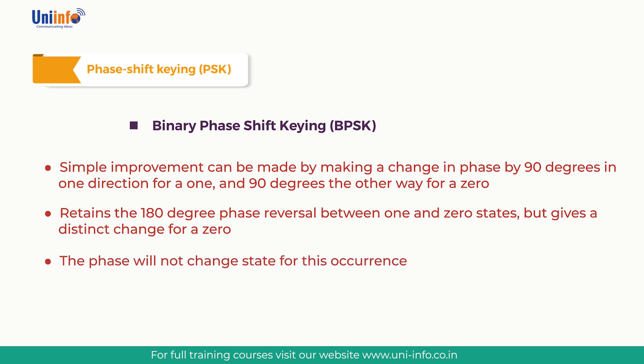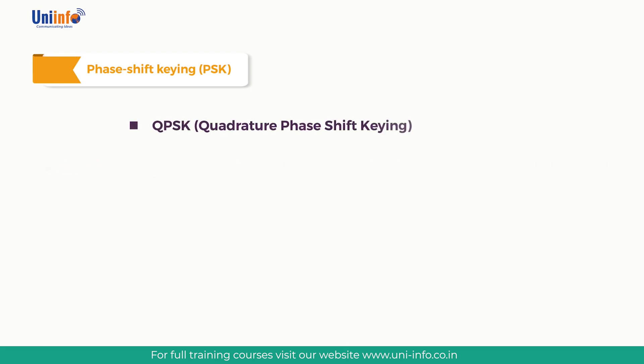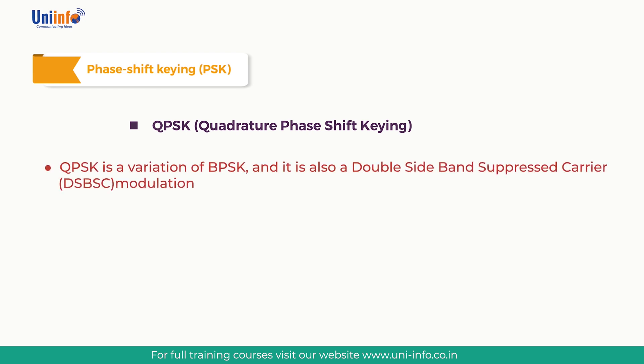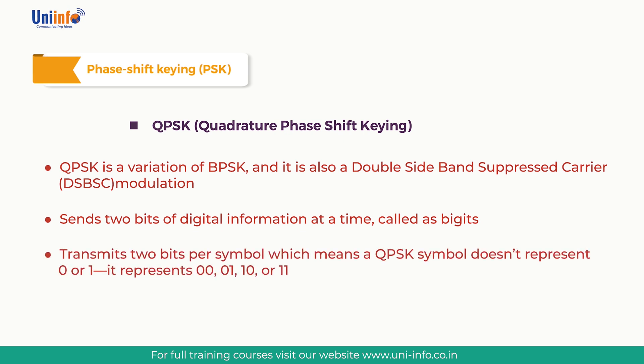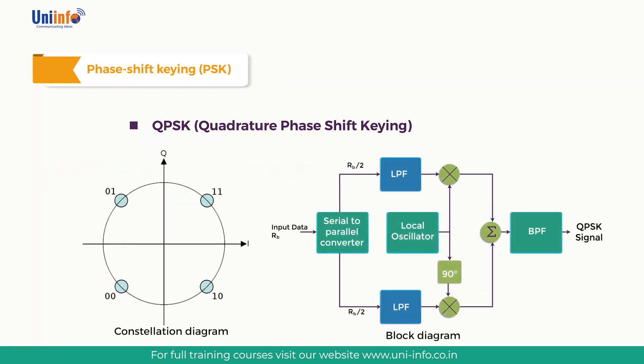QPSK is a variation of BPSK, also known as double sideband suppressed carrier (DSBSC) modulation, which sends two bits of digital information at a time. It actually transmits two bits per symbol, so a QPSK symbol represents 00, 01, 10, or 11 — not just zero or one. Instead of converting digital bits into a series of individual bits, it converts them into bit pairs, which decreases the data bit rate to half, allowing space for other users.